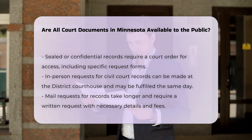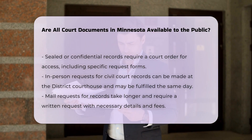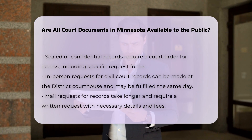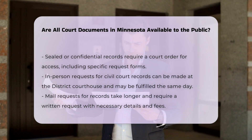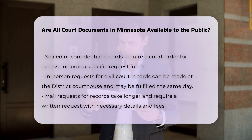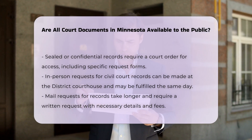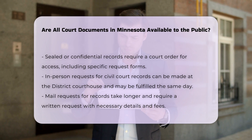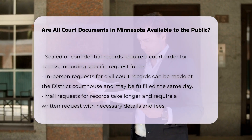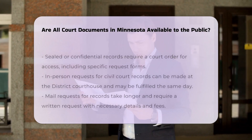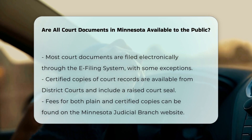In-person and mail requests. You can request copies of civil court records in person at the district courthouse where the case was heard, or by mail. For in-person requests, you can typically get the records on the same day if they are available in the courthouse. Mail requests take longer to process and require a written request with necessary details and a self-addressed return envelope, along with the copy fees.